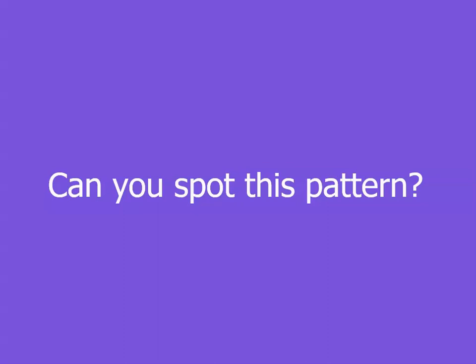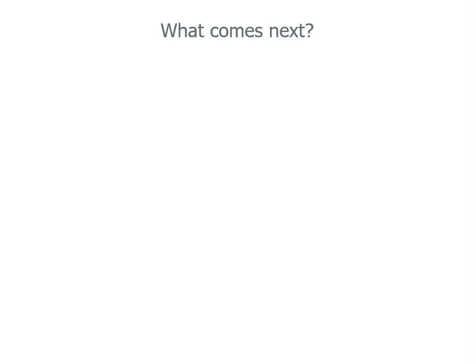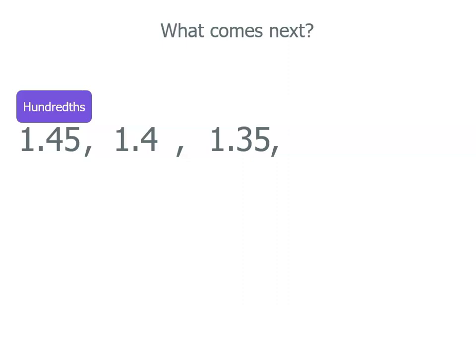This time we've got a little twist, so see if you can spot the pattern. Now this is a little different. Have a look at these numbers and see if you can work out what comes next. There's a little thing here that's different. If you look carefully, you'll see this number is 1 and 45 hundredths, this number is 1 and 4 tenths, and this number is 1 and 35 hundredths.